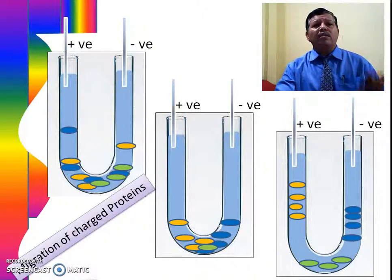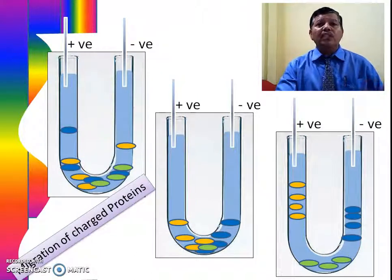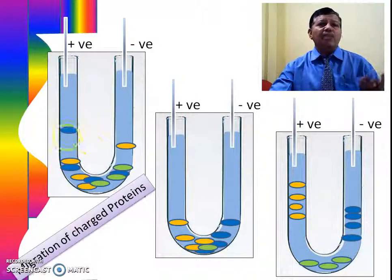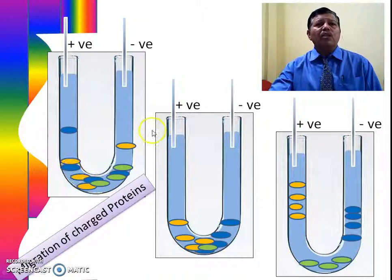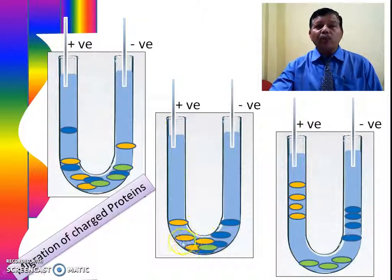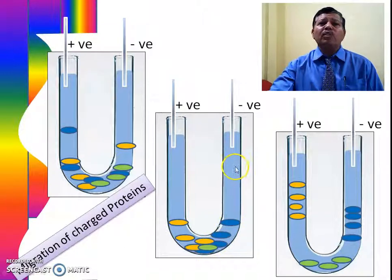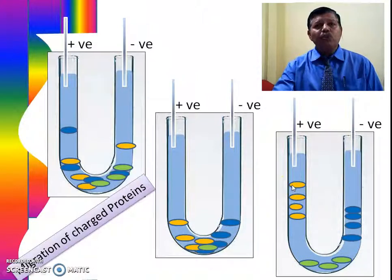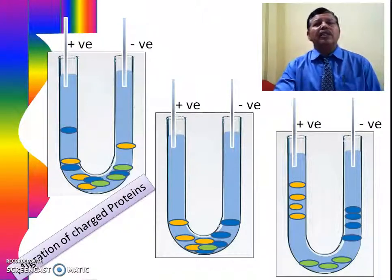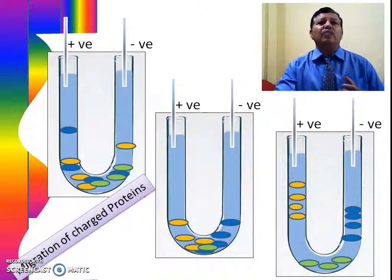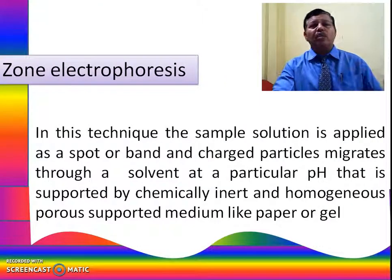An example is the migration of charged proteins. When proteins are kept in solution and the solution is connected to electrodes, after a certain time the negatively charged proteins start to move towards the positive electrode, and positively charged proteins move towards the negative electrode. After a certain time, they get separated from one another. This technique — moving boundary electrophoresis — can be used for higher macromolecules and charged proteins, which get separated in the U-tube.